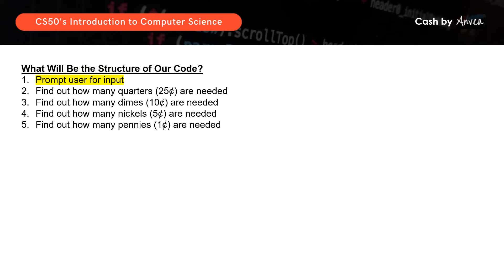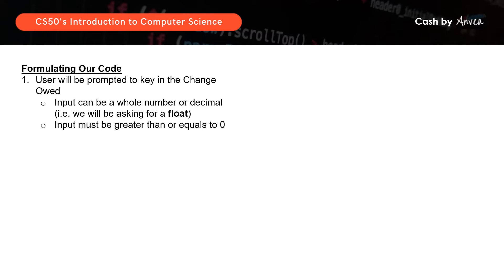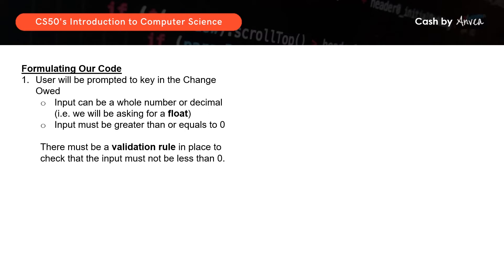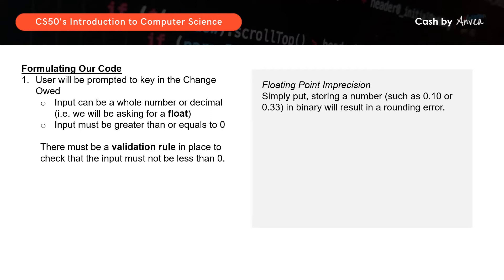The user will be prompted to key in the amount of change owed. As we all know, change can either be a whole number or a decimal, so we actually need to ask the user for a float. And the number keyed in must be greater than or equal to 0. This means there must be a validation rule in place where if the user keys in a number that is less than 0, the system will reject this input and keep prompting the user for another input. Now we will take a pause here to reinforce what we have learnt in the lecture, and that is about floating points in precision.